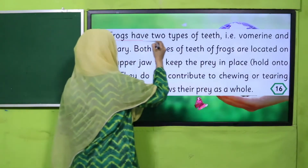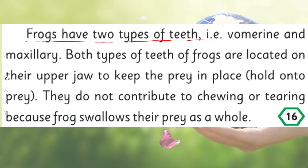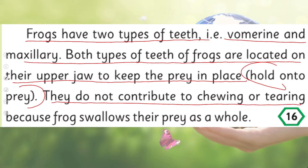Next: frogs have two types of teeth — vomerine and maxillary. Both types of teeth in frogs are located on their upper jaw to keep the prey in place. They do not contribute to chewing or tearing because the frog swallows its prey as a whole.